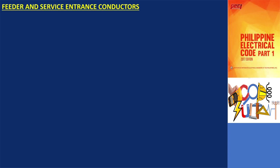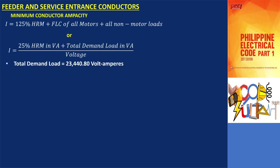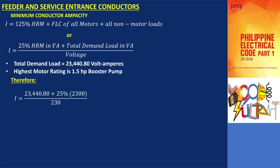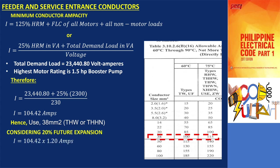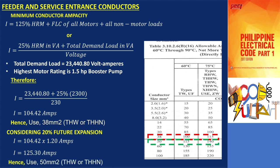Let's determine the feeder and service minimum ampacity of the conductors. The total demand load is 23,440.80 volt amperes, and the highest rated motor is the 1.5 horsepower booster pump. The minimum ampacity equals 23,440.80 volt amperes plus 25% of 2,300 volt amperes, divided by 230 volts. This results in a minimum ampacity of 104.42 amperes. Using ampacity table 3.10.2.6b16 at 75°C, a 38 square millimeter conductor is suitable. However, considering 20% future expansion, we multiply 104.42 by 1.20, giving 125.3 amperes. According to the table, a 50 square millimeter conductor is suitable for this higher ampacity.